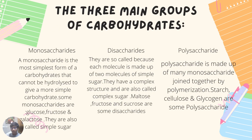There are three main groups of carbohydrates: monosaccharides, disaccharides, and polysaccharides. A monosaccharide is the simplest form of carbohydrate that cannot be hydrolyzed to give a simpler carbohydrate. Some monosaccharides are glucose, fructose, and galactose, and because of their simple structure they are also called simple sugars.